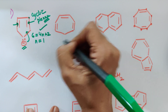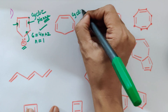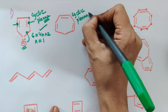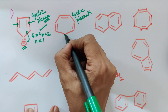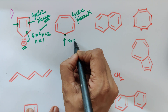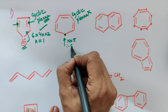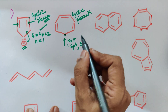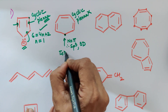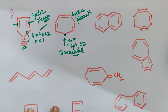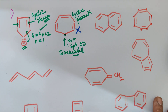Example 2: Is it cyclic? Yes. Are all the carbons planar? No. This particular carbon has no pi bond, so its hybridization is sp3 — it is three-dimensional and tetrahedral. Therefore this compound does not meet the planarity condition and is non-aromatic.